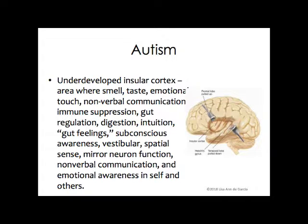In autism, something interesting to note is that the insular cortex — which is visible when the top layer of the cortex is pulled away, revealing another layer underneath — shows an underdeveloped insular cortex on the right side. This area is where sense of smell, taste, emotional touch, nonverbal communication, immune suppression, gut regulation, digestion, intuition, vestibular and spatial sense, mirror neuron functions, and emotional awareness in self and others all converge. Essentially, this area encompasses the classical symptoms of autism.